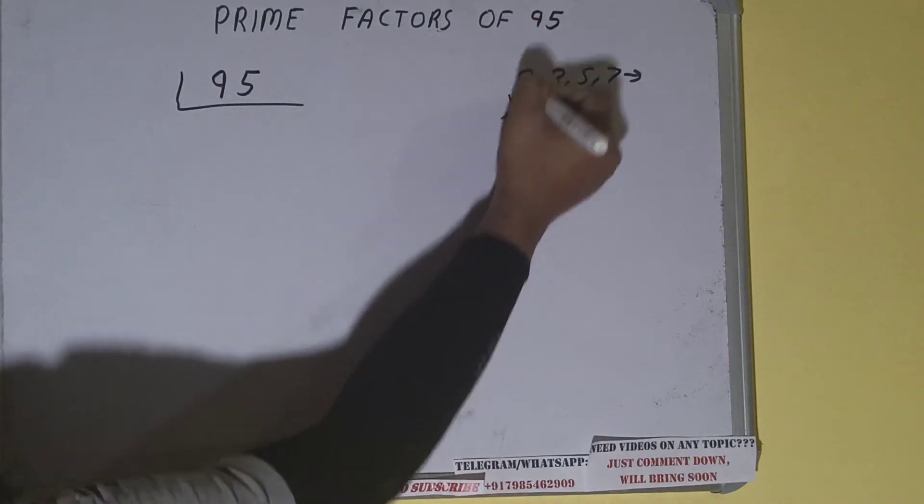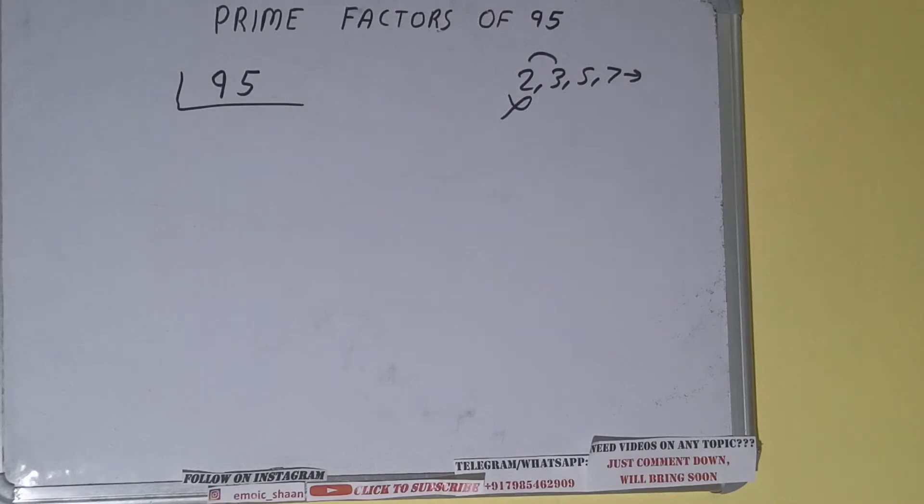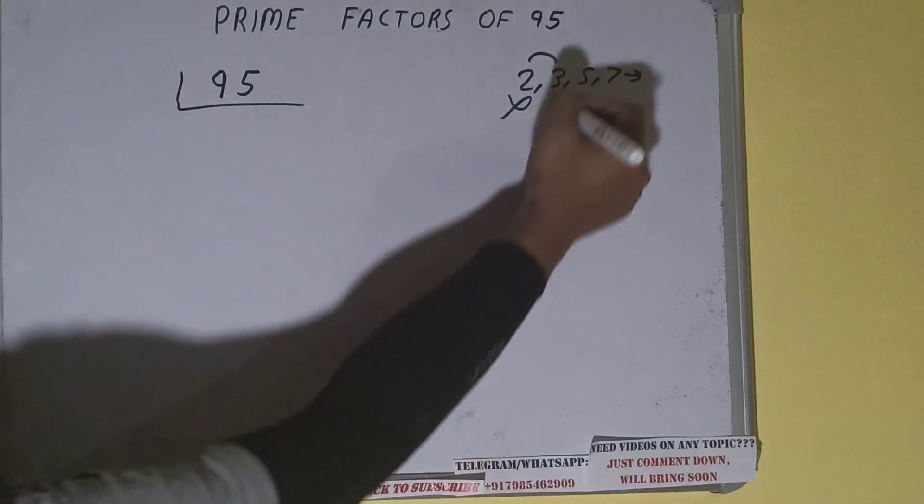So we'll be going to the next lowest prime number, that is 3. Okay, so if we check, is the number 95 divisible by 3? 3, 9, 3, 12, not divisible. So we'll be going to the next lowest one, that is 5.